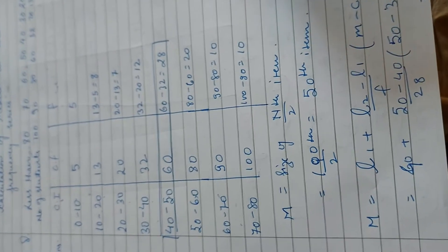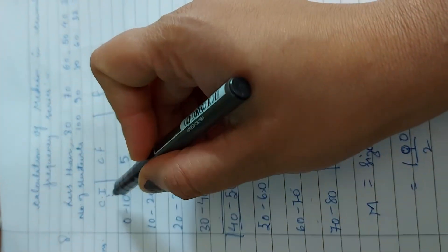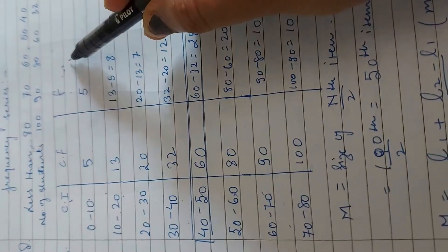And calculate karna hai median, to hum is tarah se calculate karte hai. See, we make three columns. The first is class interval, second is cumulative frequency, and third is frequency.